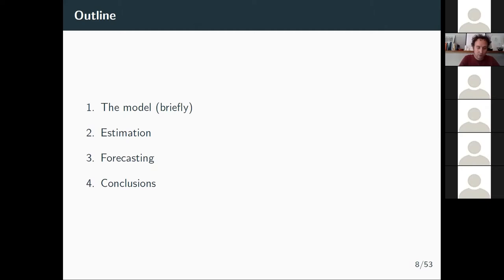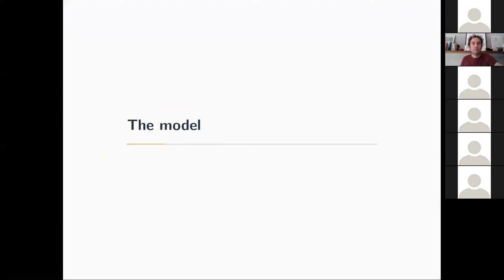So this was the introduction. I gave you some ideas about what's going to happen next. This is the outline: I'm going to show you the model very quickly — not equations, just the intuition — then the estimation method and results, then the forecasting method and forecasting results. The model is an agent-based model with all the perks and problems of agent-based models — a fully computational model with many agents, many interactions.